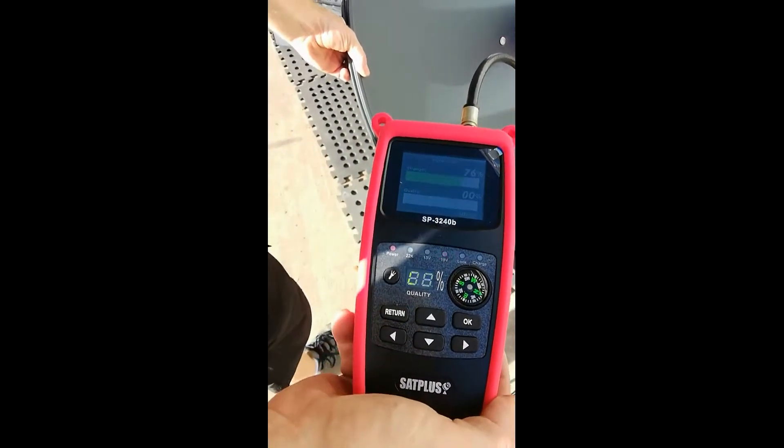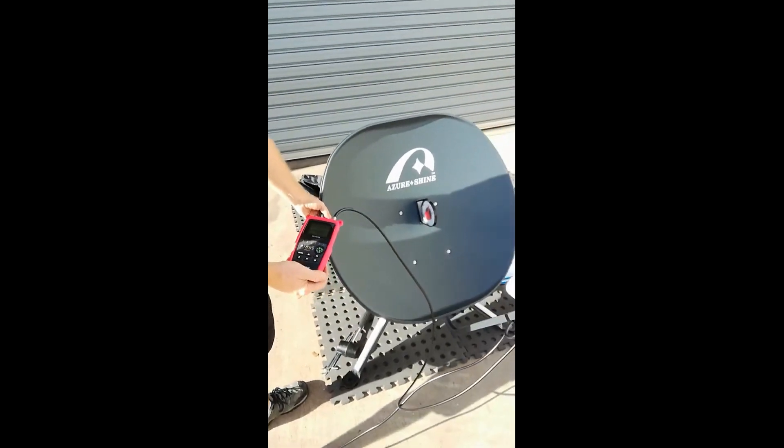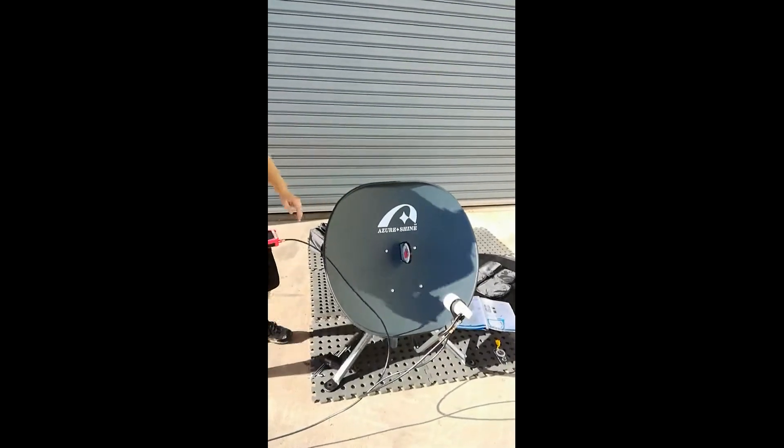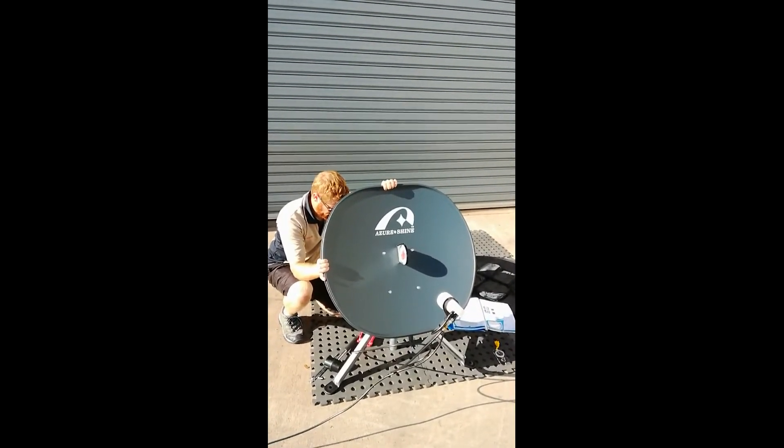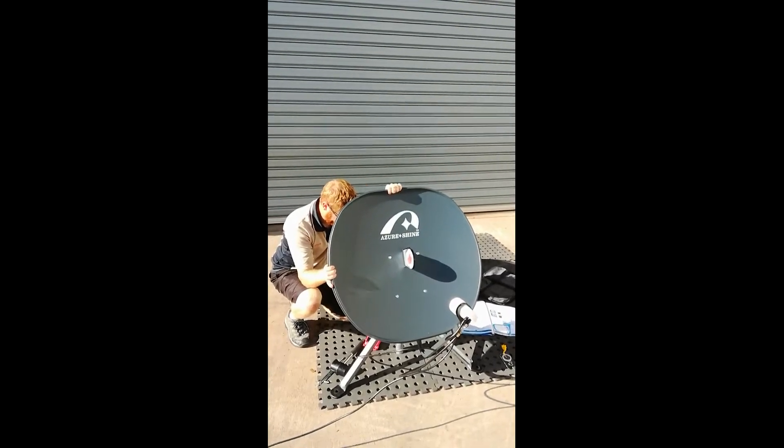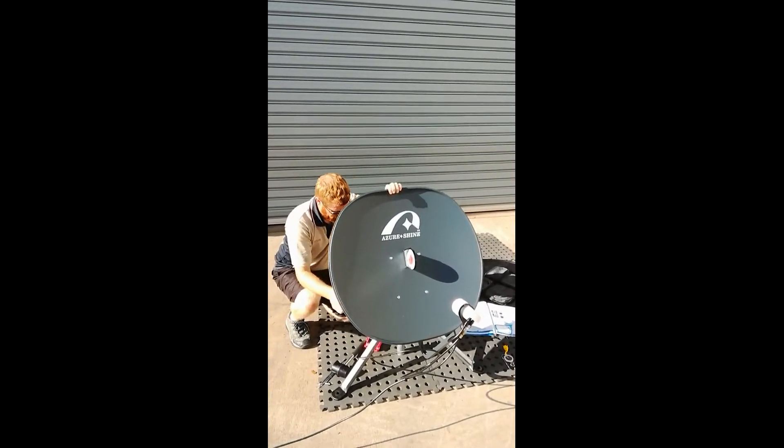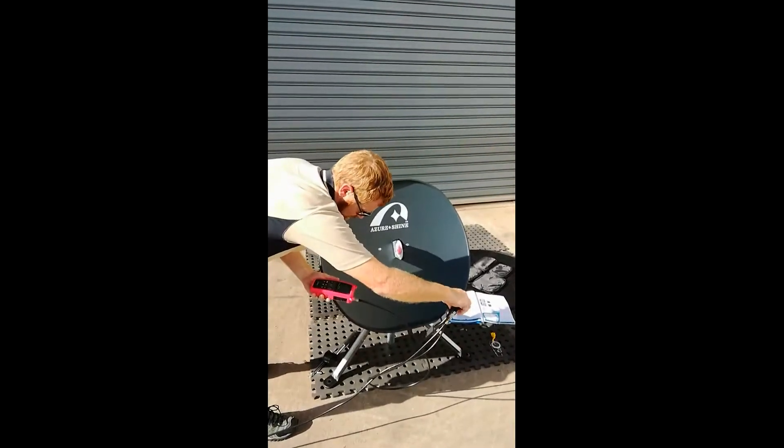So I'll bring that around and we're trying to get that number down the bottom as high as we can with small, small movements. And we'll adjust the height. And then we'll just check the LNB skew to confirm that it's as high as we can get it.